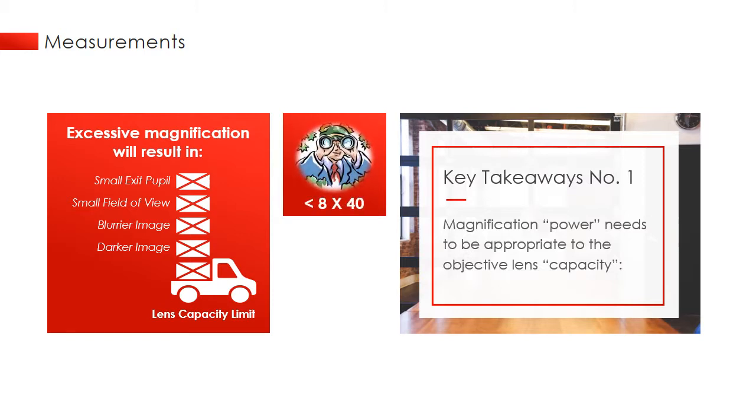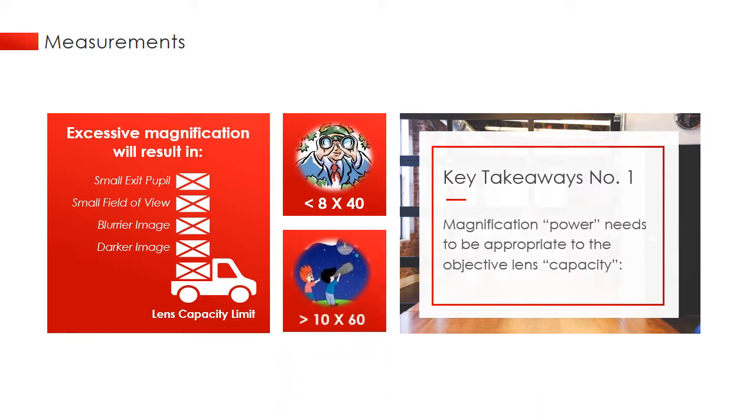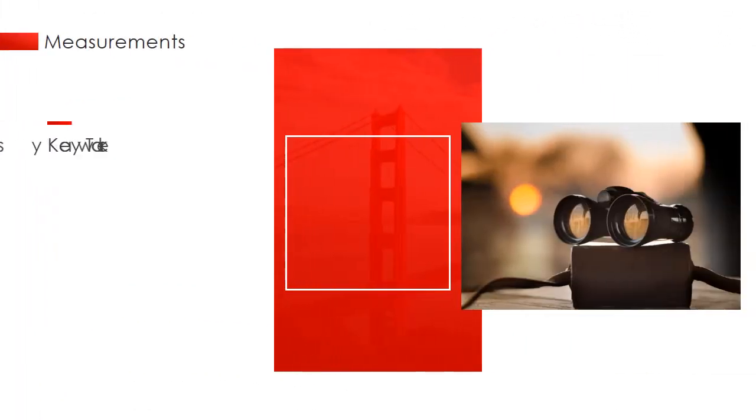Therefore, for bird watching or general usage such as concerts or sport events, binoculars up to eight times magnification and 40 millimeter objective lens is sufficient. For stargazing at night, however, you will need more magnification power and much larger objective lens. The second takeaway is that you need binoculars with longer eye relief to accommodate the extra space created by wearing glasses.